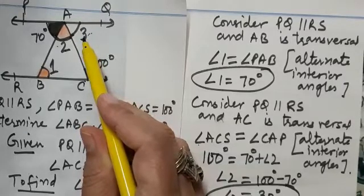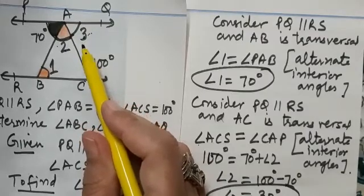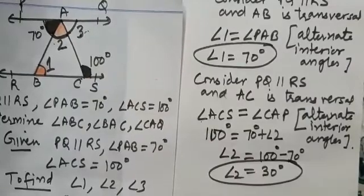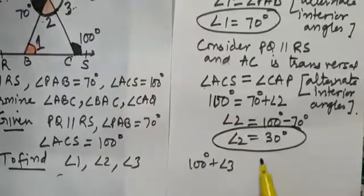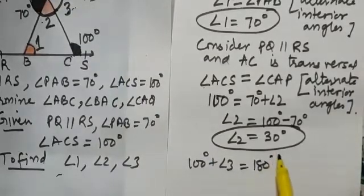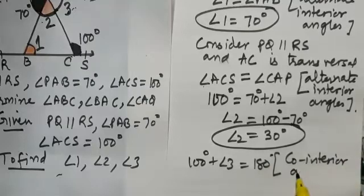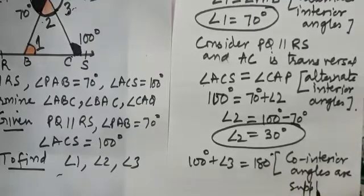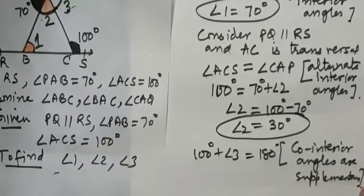Yes, what's the reason for that? Yes, you are right. They are making co-interior angles and co-interior angles are supplementary. So here we can say that 100 degrees plus angle 3 is 180 degrees. So they are making co-interior angles and we know that co-interior angles are supplementary. So supplementary angles, their sum is 180 degrees.